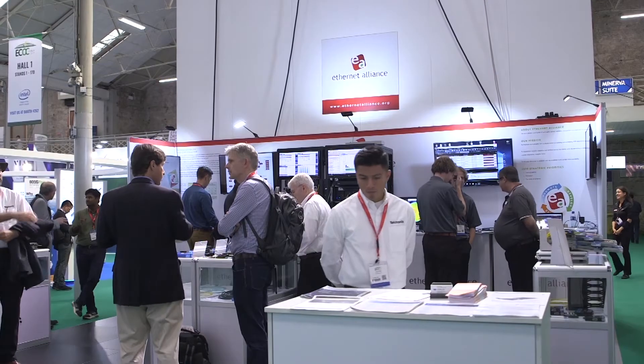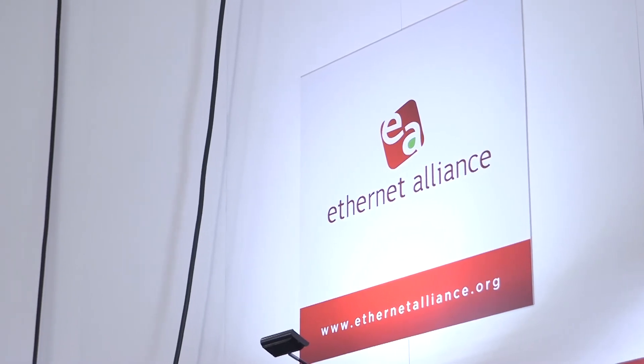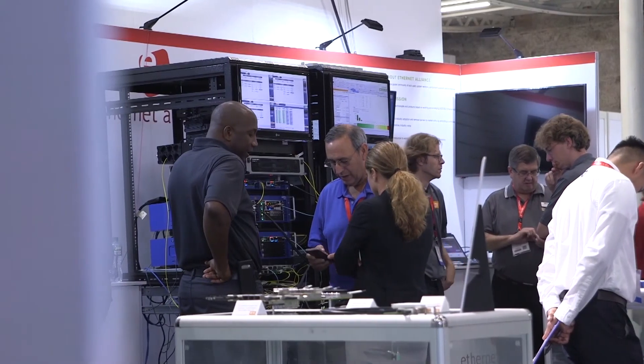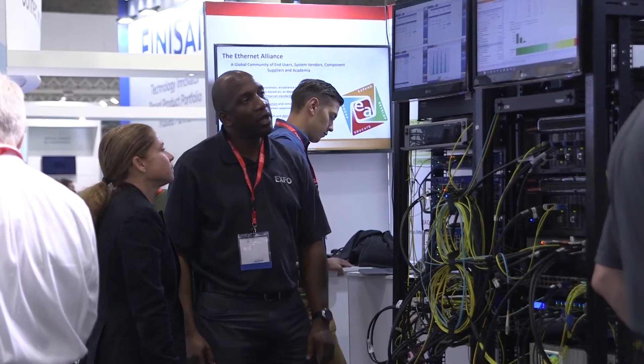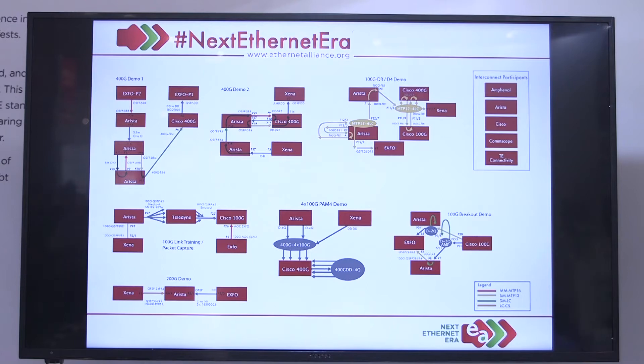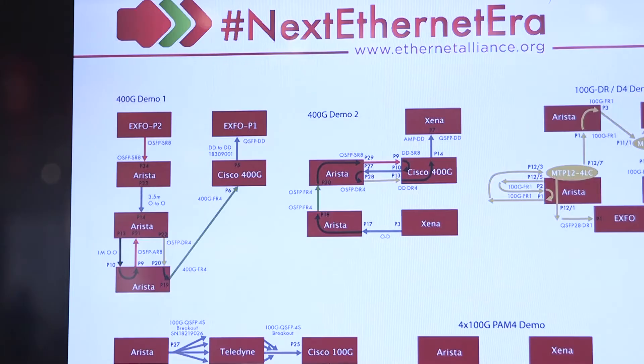At the Ethernet Alliance booth we're demonstrating 400 gig interoperability, showing multiple test vendors where we are generating 100 gig, 400 gig, and 200 gig signals going to multiple test switches including the Arista switch and other test generators. The goal is to show these transmission rates across different media — OSFP, QSFPDD, QSFP28, DR1 through DR4 technologies, and so forth.